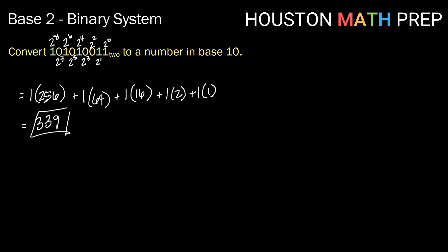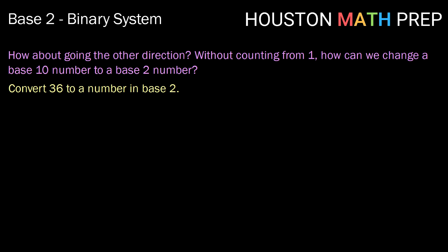Now, if we can go one direction, can we go the other? Of course. Without counting from 1, how do we change 36 to a number in base 2? We can do this several different ways. One way is thinking about the largest power of 2 that fits inside 36. For us, that's 32. So we can think of 36 as 32 plus 4. This tells us we have one group of 2 to the 5th power, or 32,